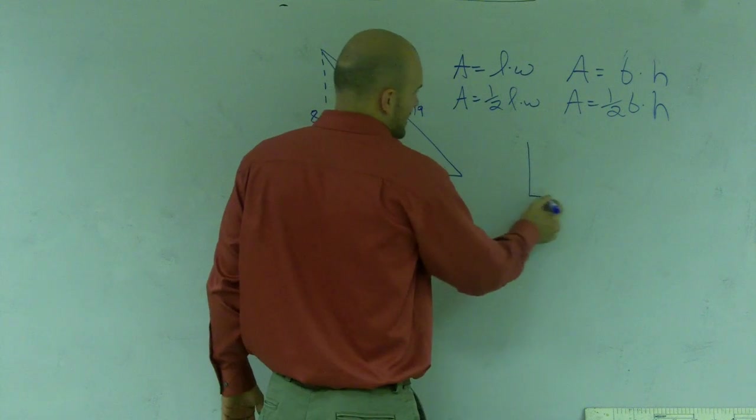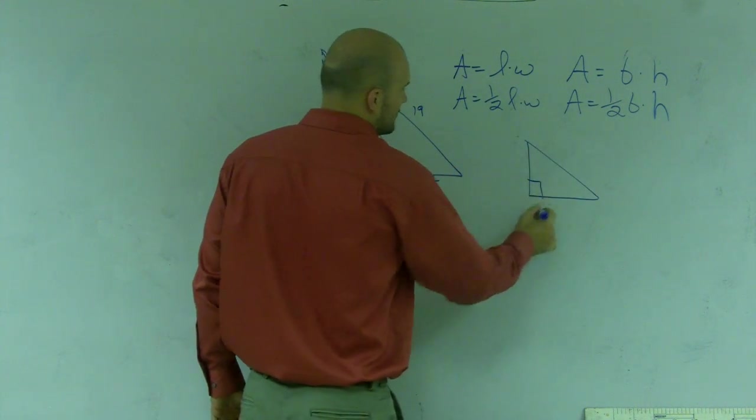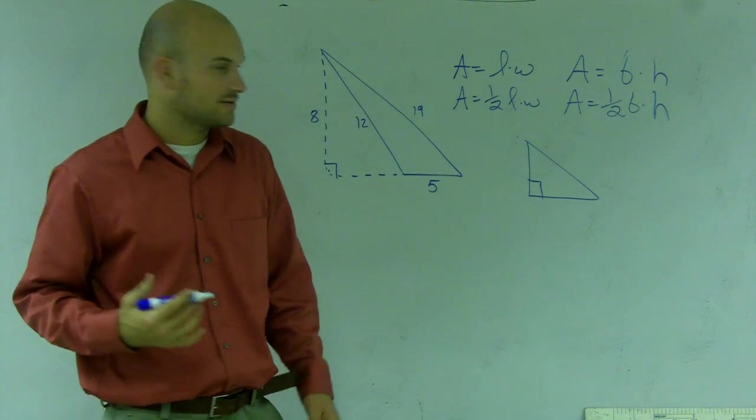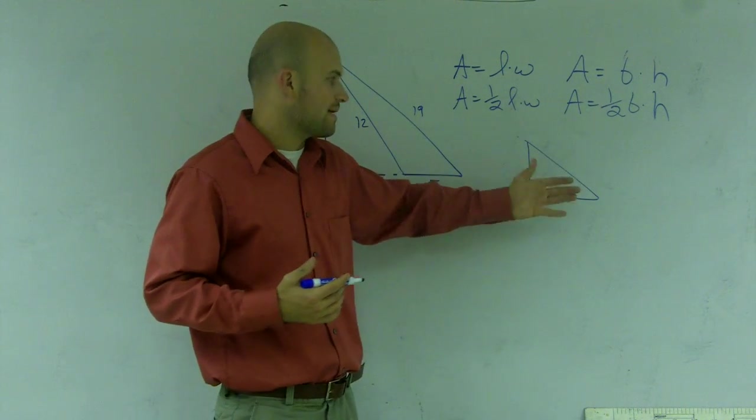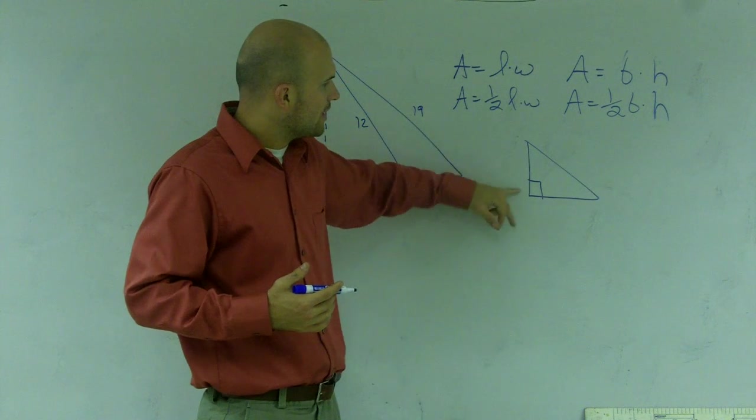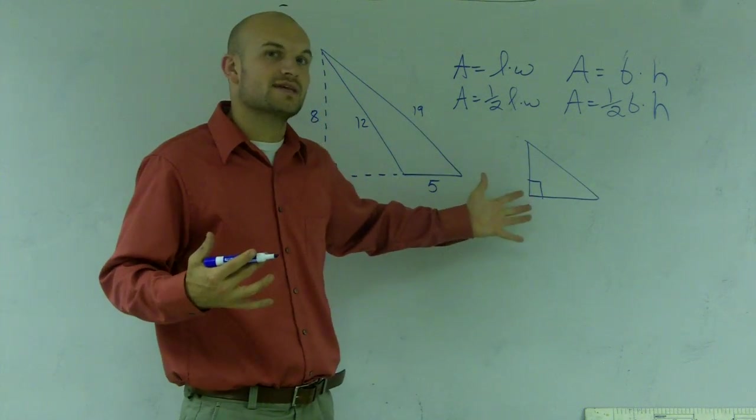When you have a right triangle, meaning my triangle has a right angle, I have a base—and this could also be my length or my width—then I have a height or a length. So you have two different sides, right?